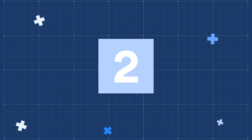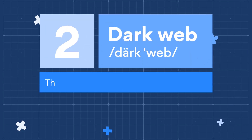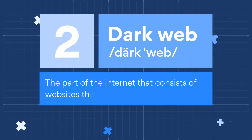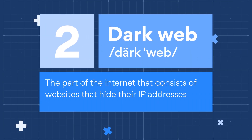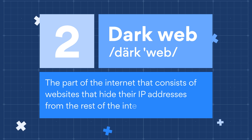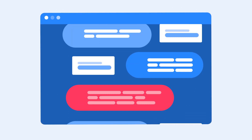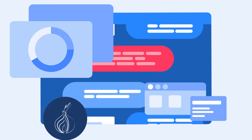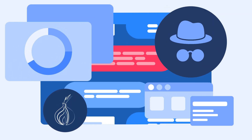Number 2: The Dark Web. The Dark Web is the part of the Internet that consists of websites that hide their IP addresses from the rest of the Internet. In order to access websites on the Dark Web, you will need specific software.